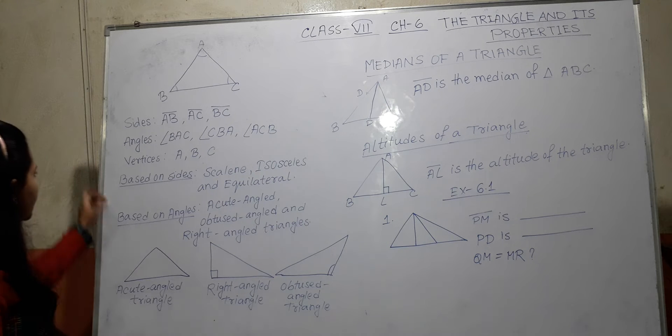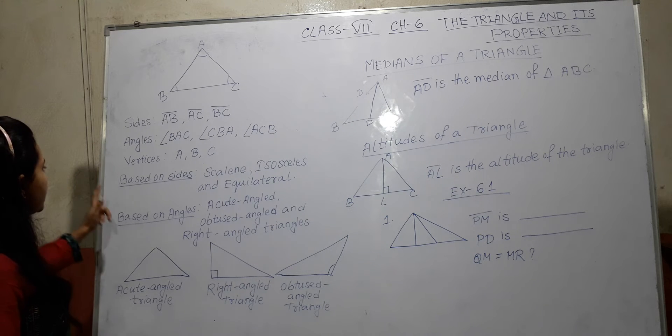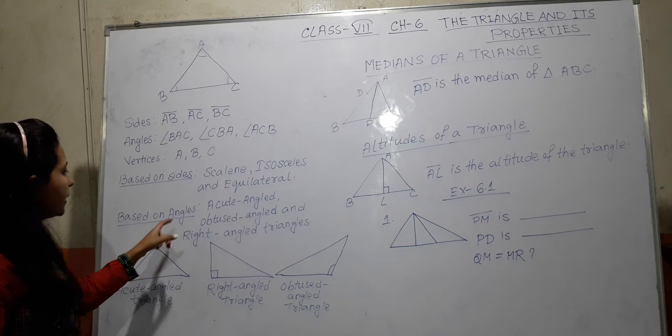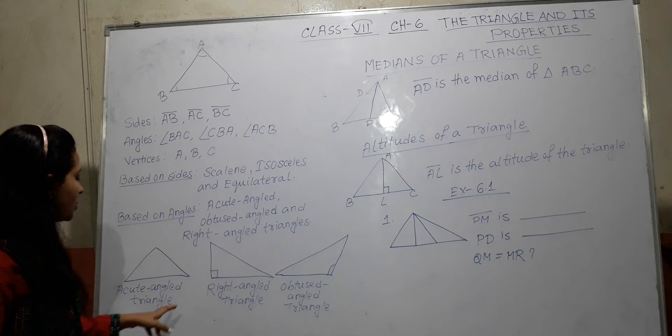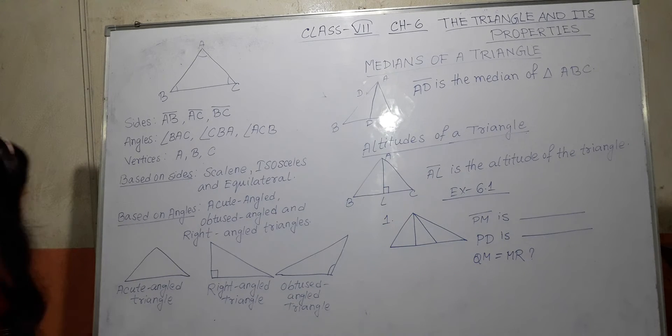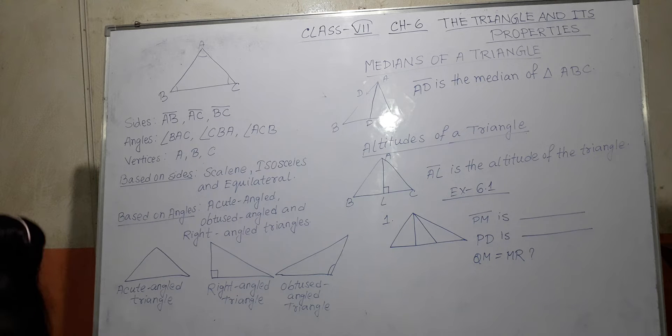And right angle triangle means whose one angle is right angle. Based on sides, these 3 types. Based on angles, another 3 types. This is your preliminary concept of triangle which you already know from your junior classes.